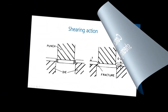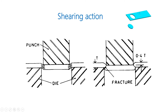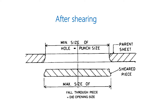Regarding the shearing action: this is a punch and die setup with our sheet. When we apply a force in the vertical direction, deformation starts to occur at the corner. When we continue applying force, 40% of the sheet thickness gets cut, and after that the sheet simply breaks. So the complete 100% is not cut by the punch — this is very important. Once we increase the force, the blank will simply come out from the parent sheet.